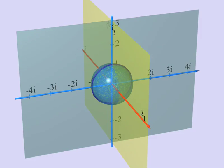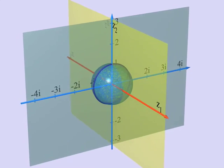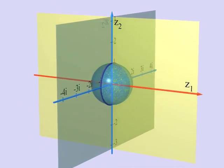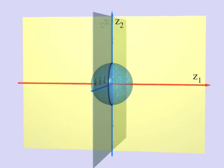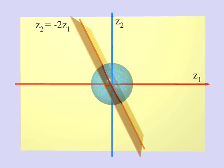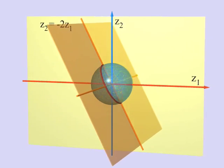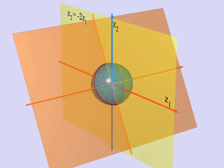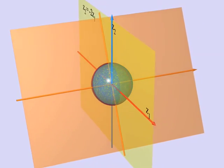Now what is true for the horizontal line and the vertical line is equally true for all lines going through the origin. Here you can see the line with equation Z2 equal to minus 2Z1. But we could do the same with any line Z2 equal to A times Z1 for any complex number A.